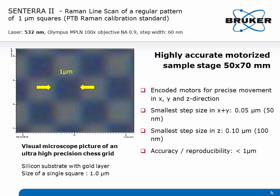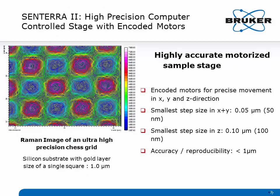To achieve this kind of precision, it's not only necessary to have a high-quality objective, but you also need a highly accurate motorized sample stage. The Sentera II features encoded motors for precise movement in all three directions. The smallest step size in X and Y is 50 nm and the smallest step size in Z is 100 nm. The accuracy and reproducibility of the sample stage is defined as better than 1 µm, but as you can already see from the chemical image above, the accuracy is way higher than this.